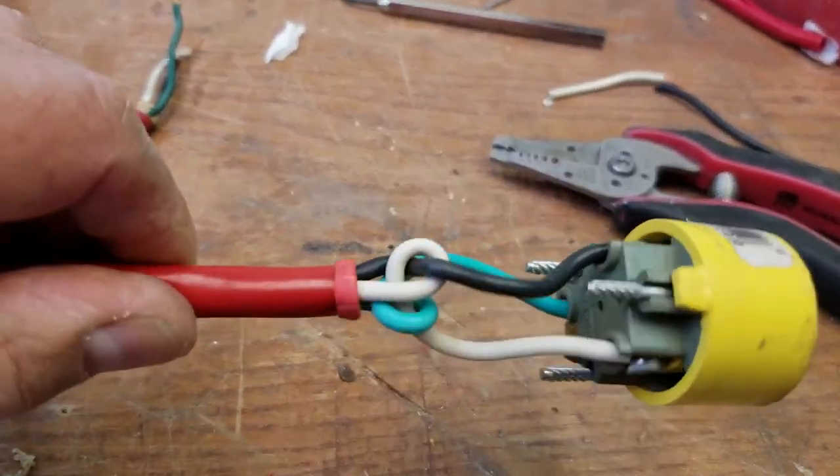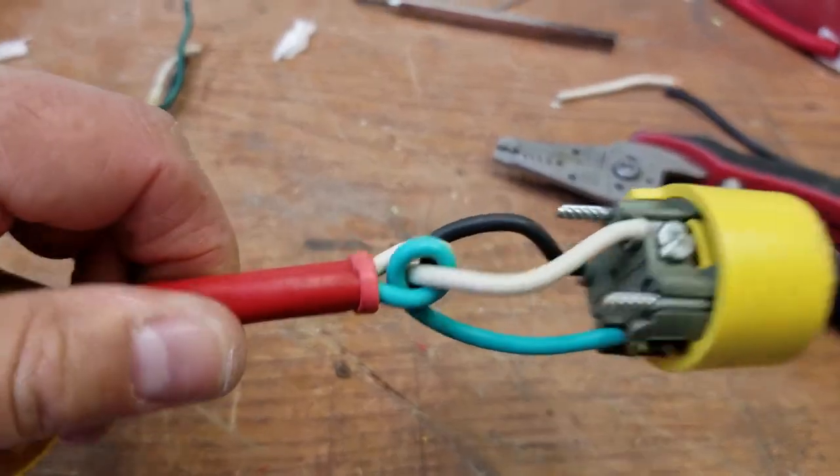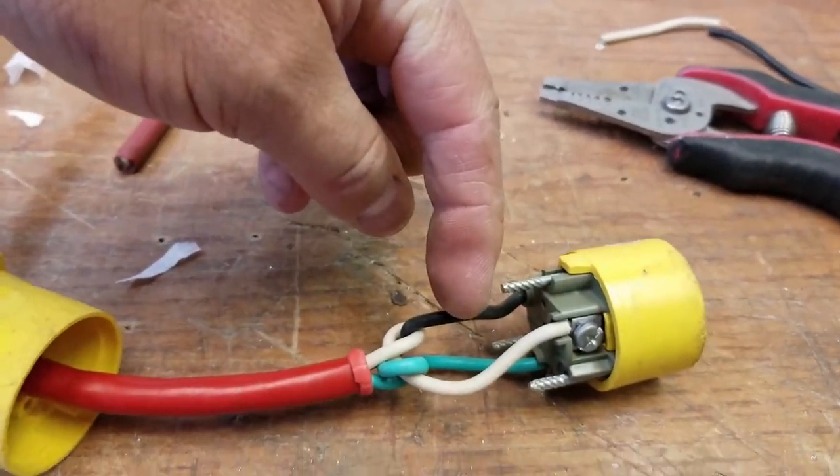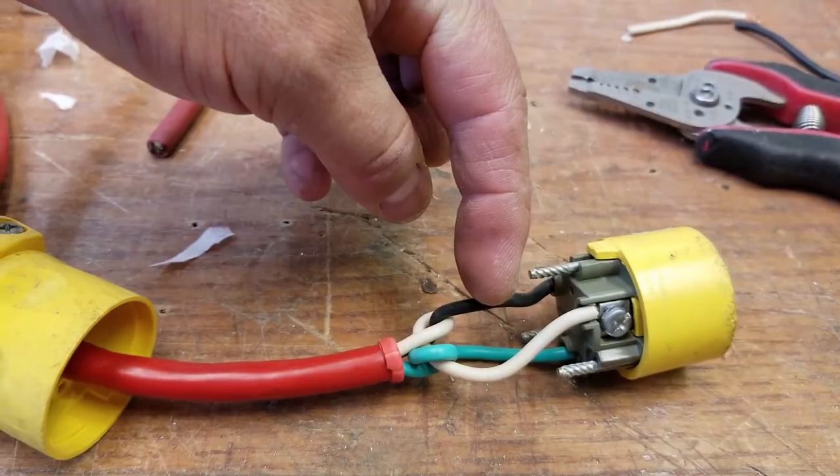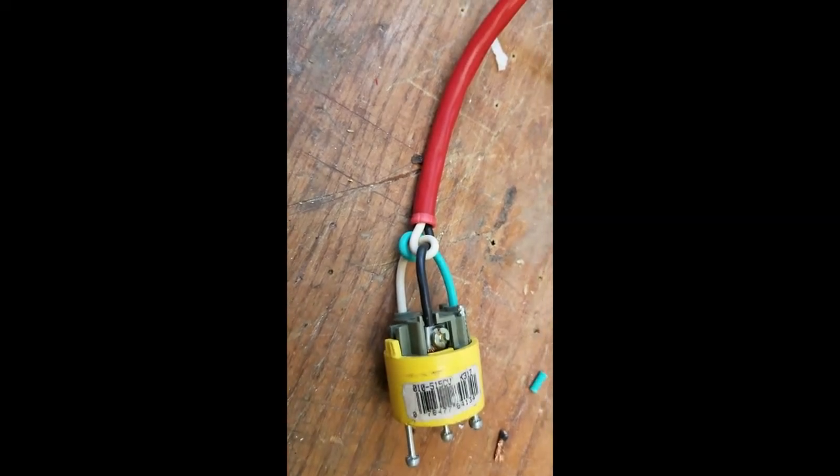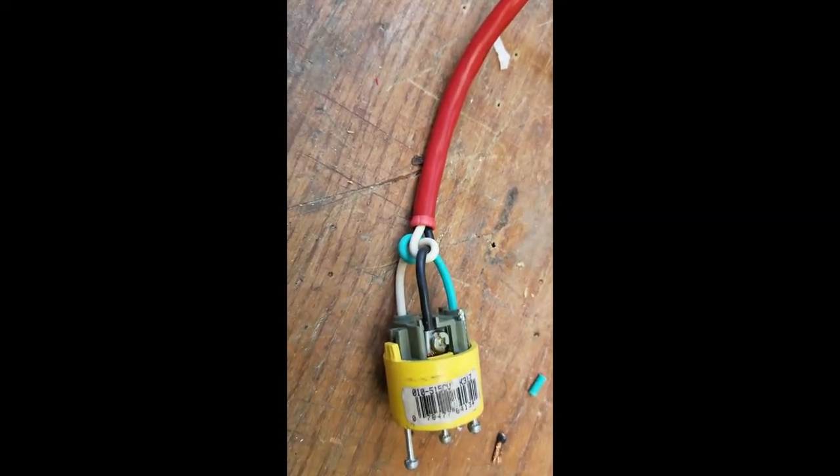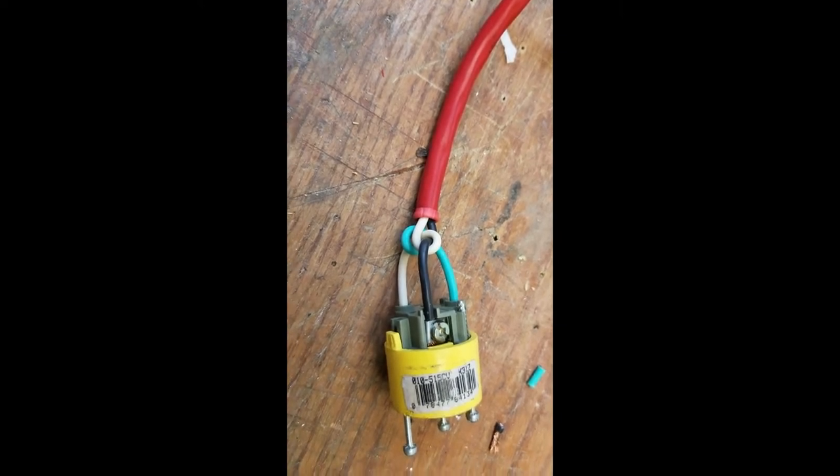Those wires are way too long so we're going to have to trim that back a bit. We want the front part somewhere around there. It looks much better, that'll fit in. Then you tighten up your screws to make sure you've got a good electrical connection and then you're done.